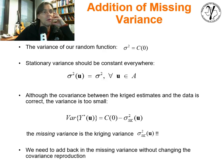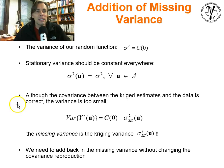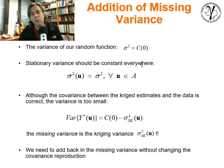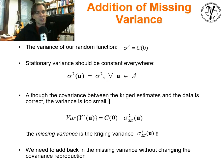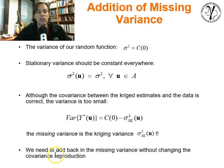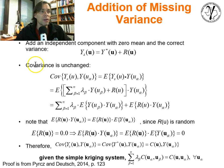We need to add the missing variance in. We propose working with a residual. We know the variance is supposed to equal the sample variance of our data set — the stationary variance should be constant everywhere. Although the covariance between the kriging estimates and the data is correct, the variance is still too small, and the missing variance is the kriging variance. So we need to add back in that missing variance component. But we want to make sure we're not changing the covariance reproduction, since we said we're doing a fine job with the covariance between the data and the estimate location.